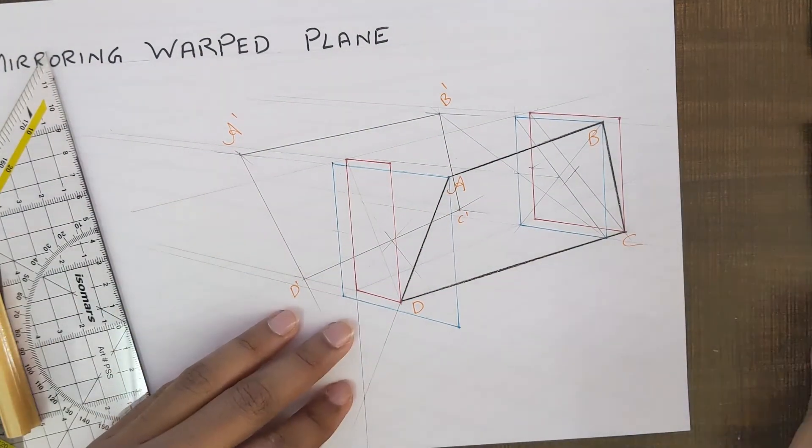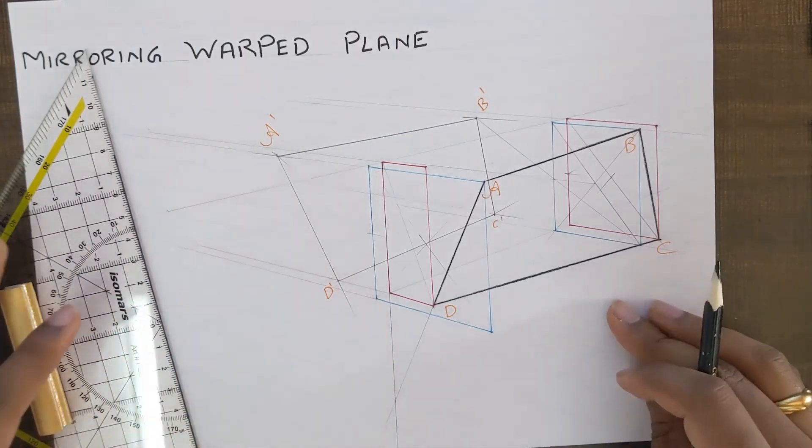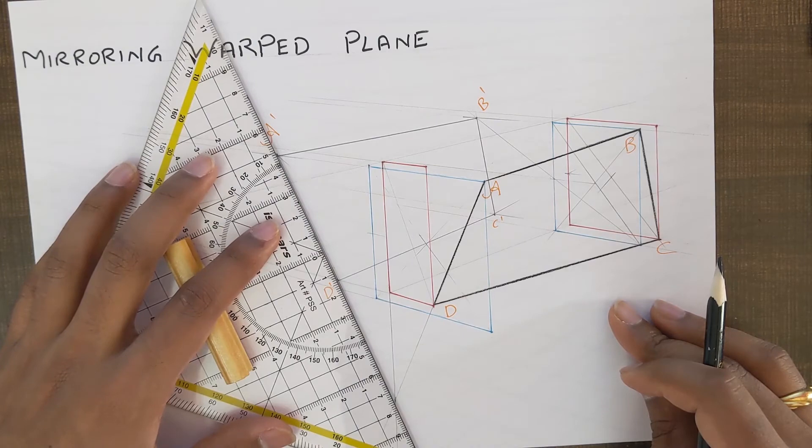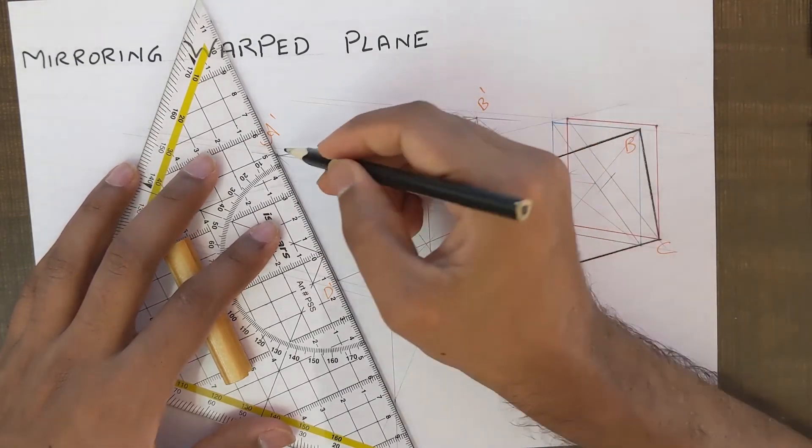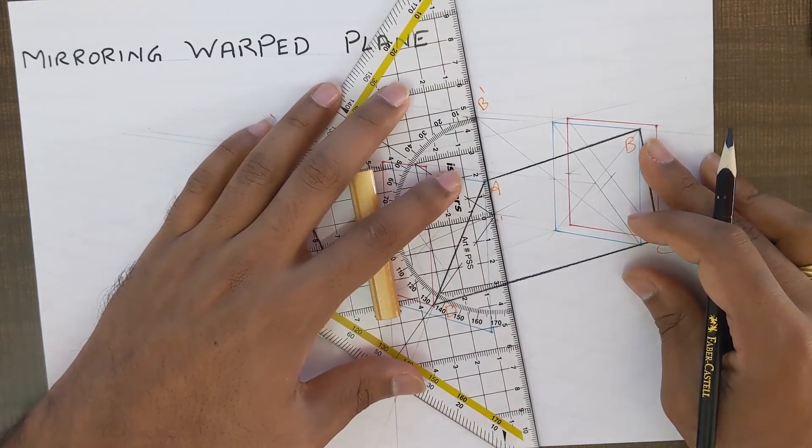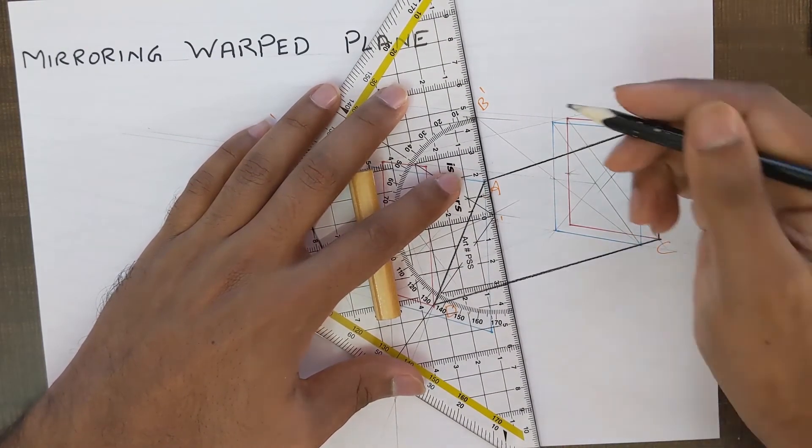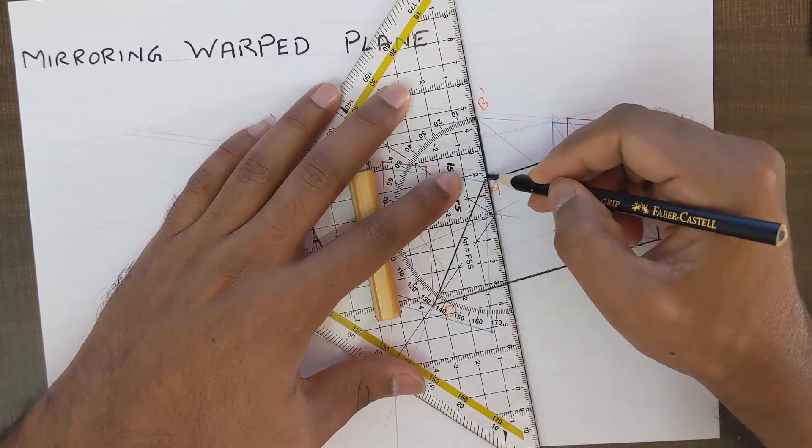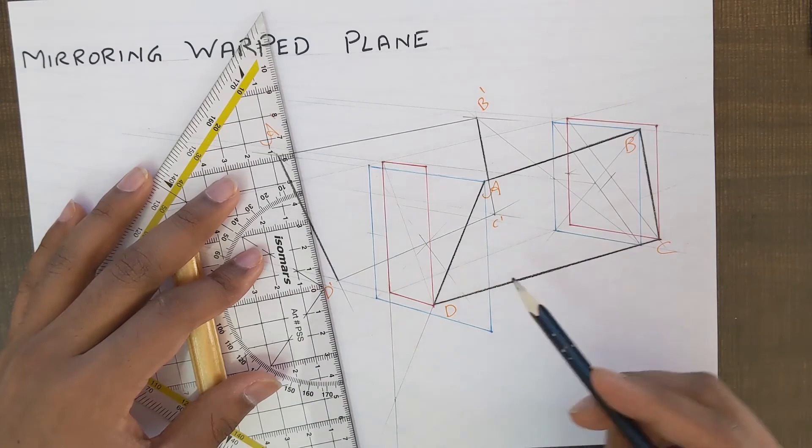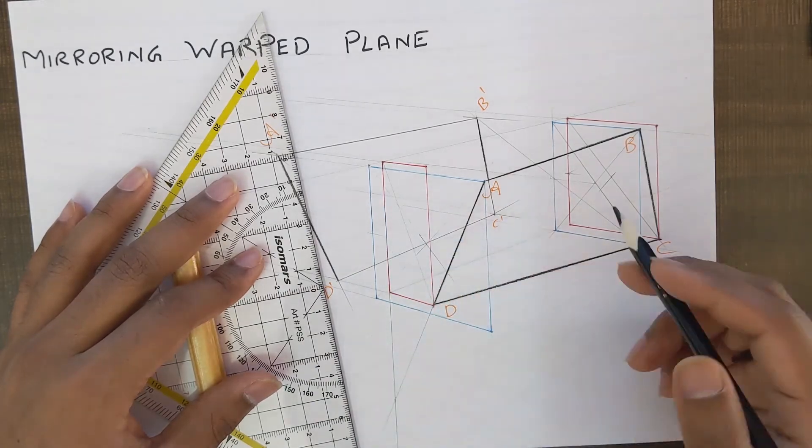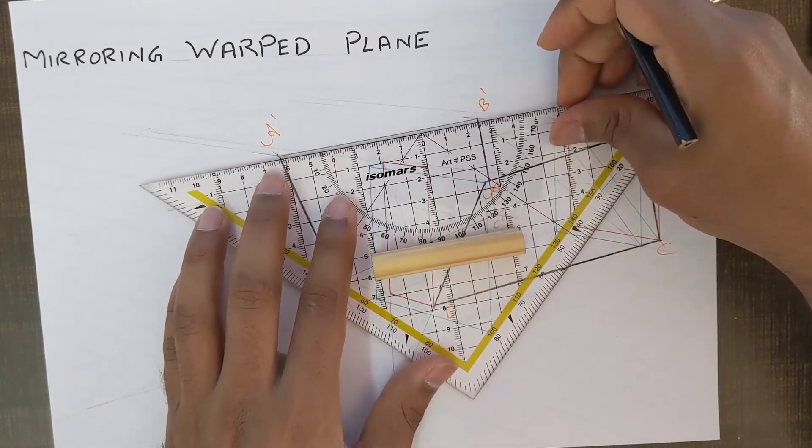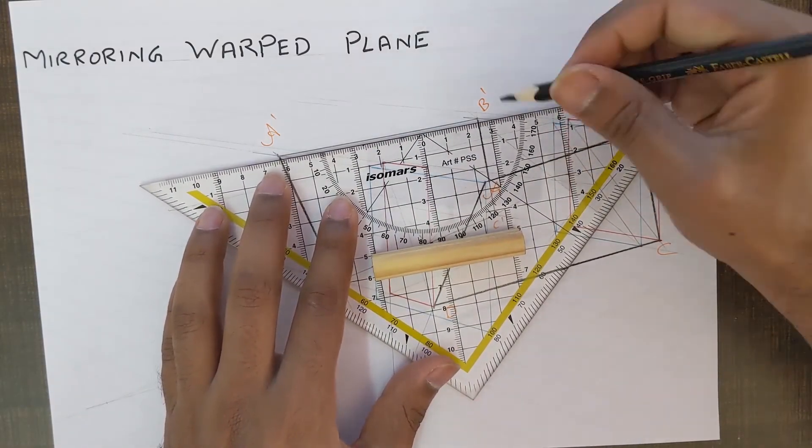As you saw over here, be it tilted plane, rotated plane or a warp plane, the techniques which are used to mirror these planes remain the same. Just be sure as to where you're finding the center and how you are extending your lines to find the points on the other side. If you just follow the same procedures, I think you'll be good.